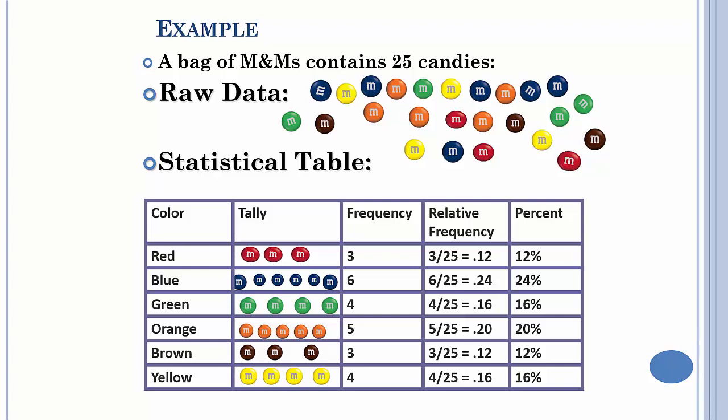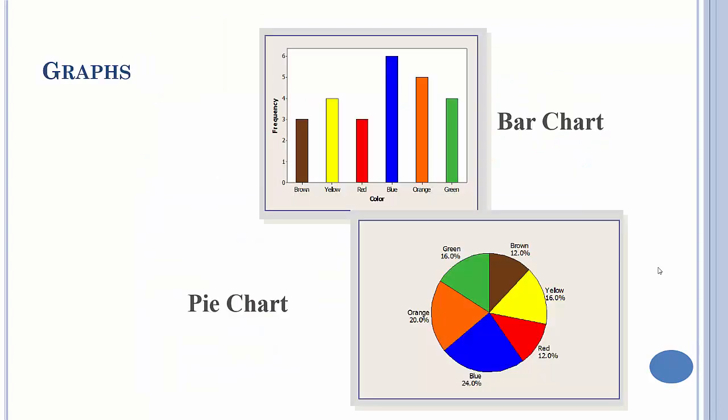You take everything divide it by 25 and then report that as a percent, and that becomes your relative frequency. Then cumulative frequency you're just accumulating everything. You would do blue plus red, but you really wouldn't do cumulative frequency with qualitative data because it doesn't make sense. So you would really just do frequency, relative frequency, and you could think of percent as being a third, but really percent is just a different way of describing relative frequency. We all know that 0.12 is the same thing as 12%.